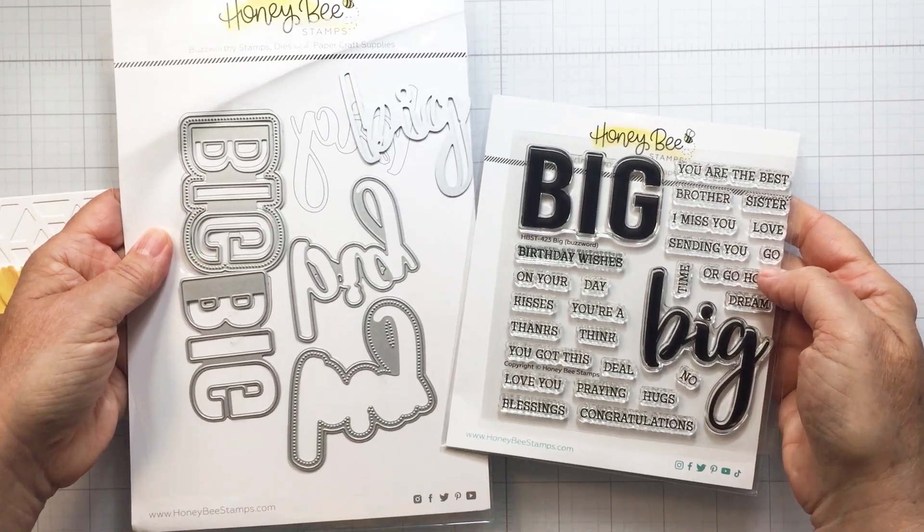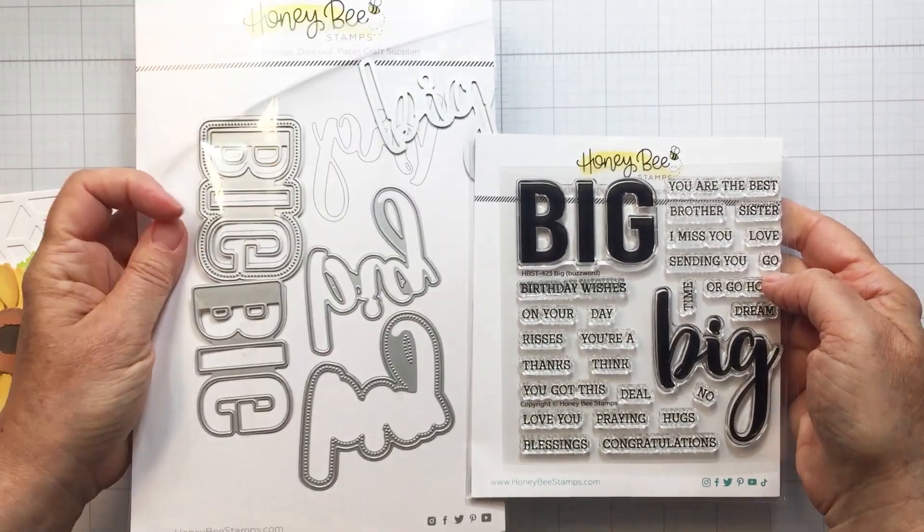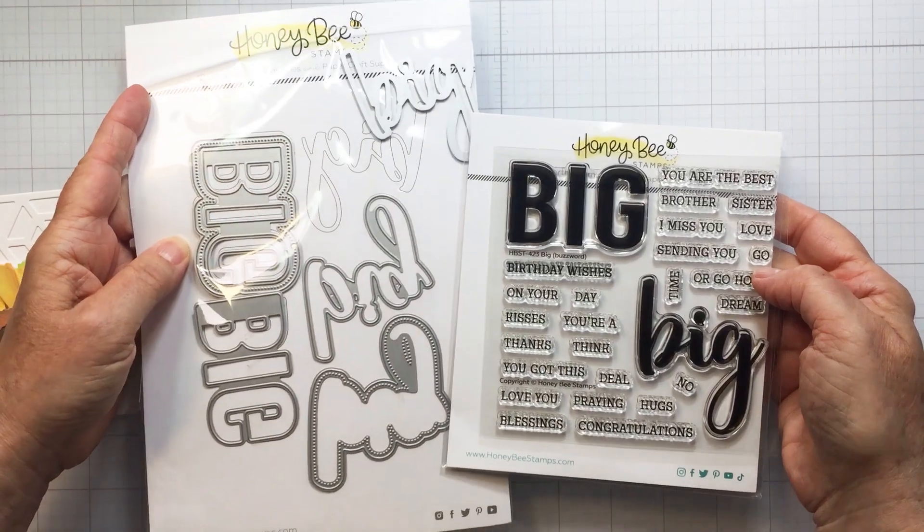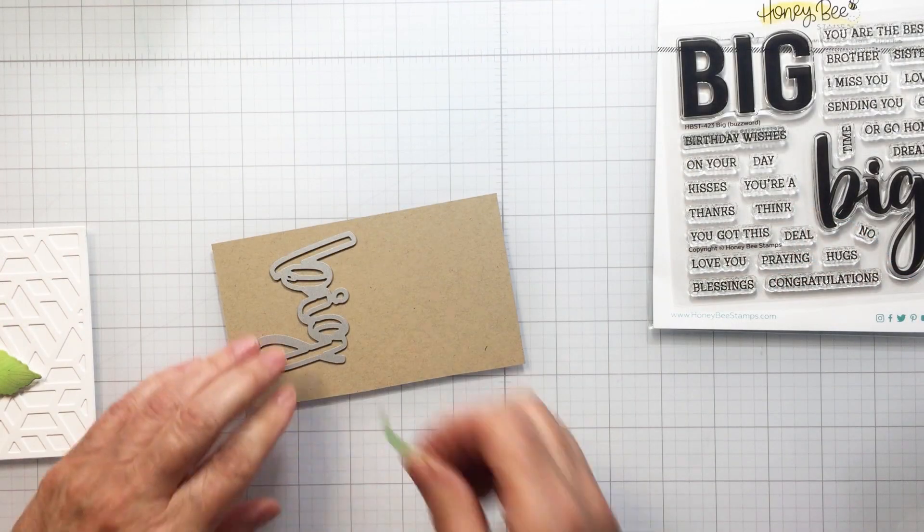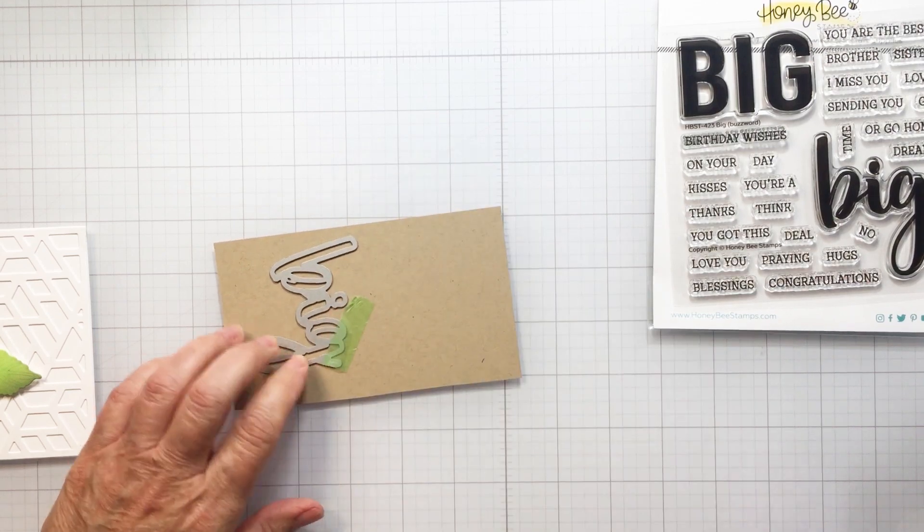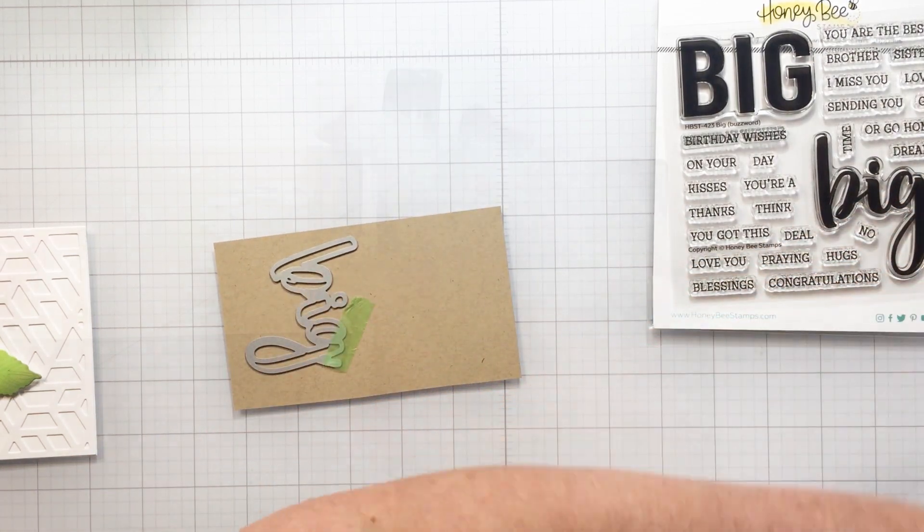So I'll just finish up with that foam adhesive and now I'm going to be using the big buzzword die and coordinating stamp set. I love the bitty buzzwords, but this is the larger buzzword and the impact that they add to a card is just so fantastic.